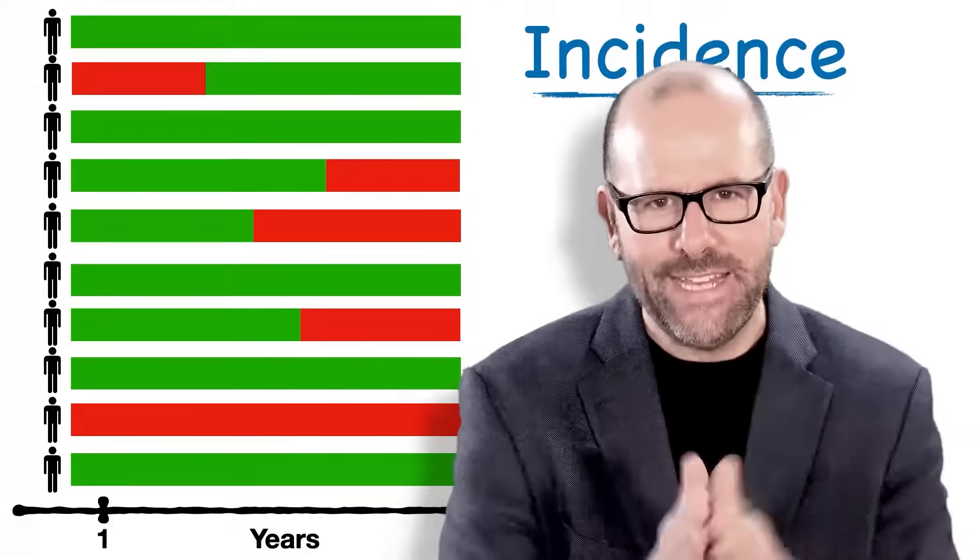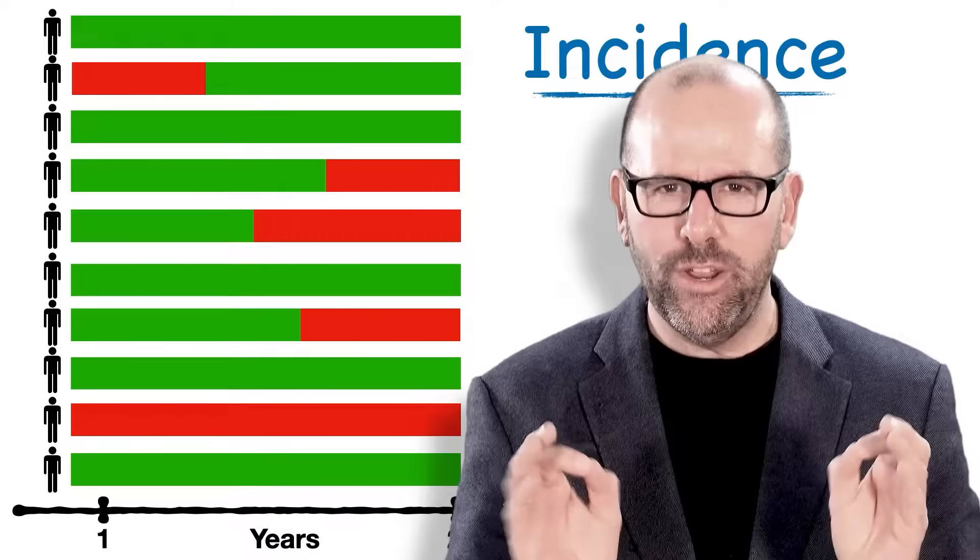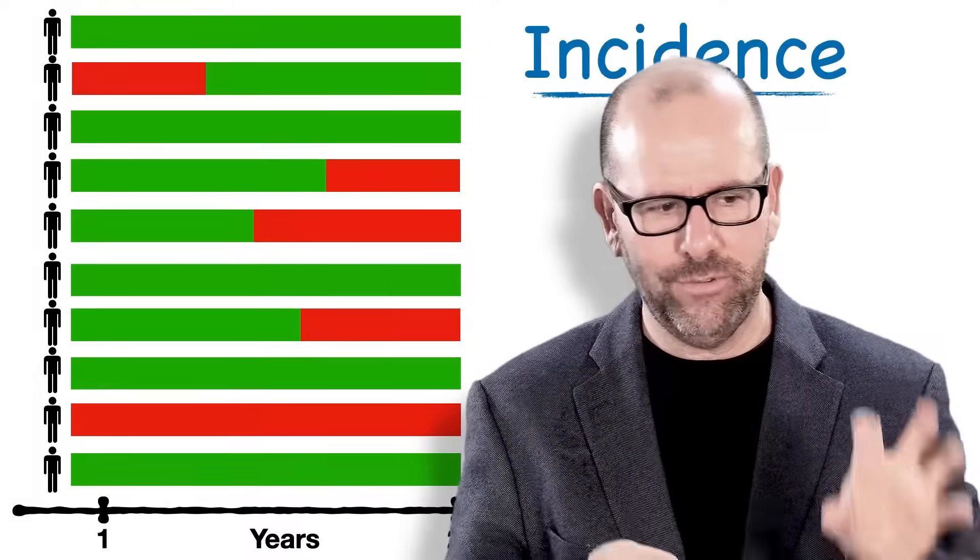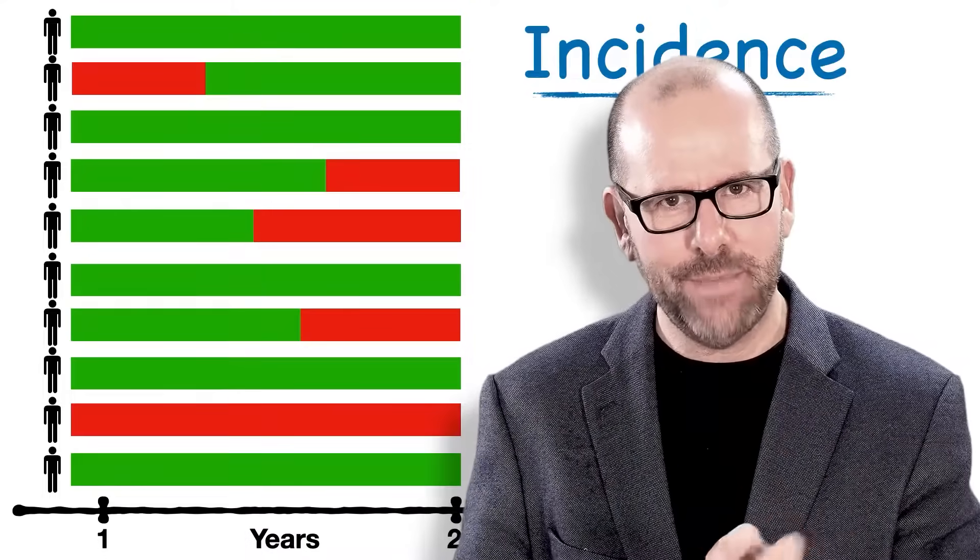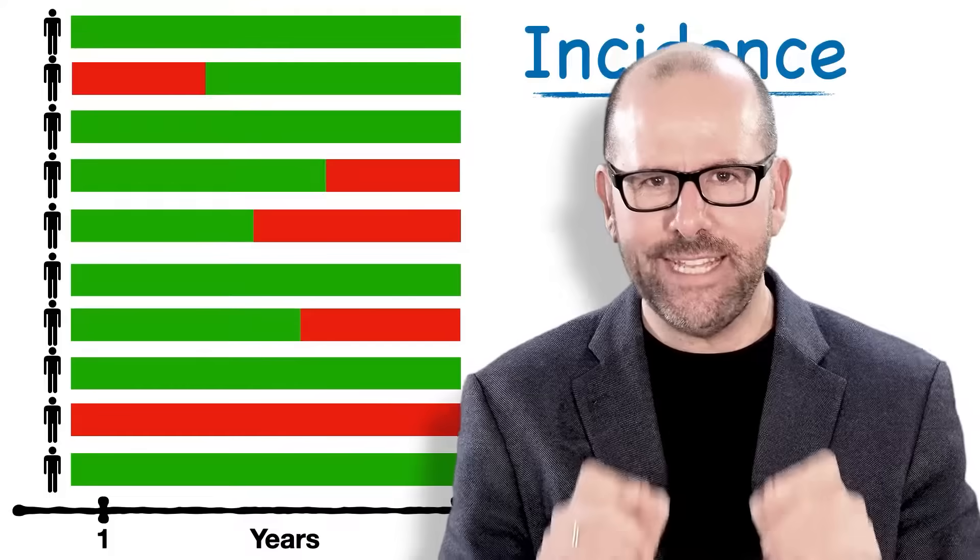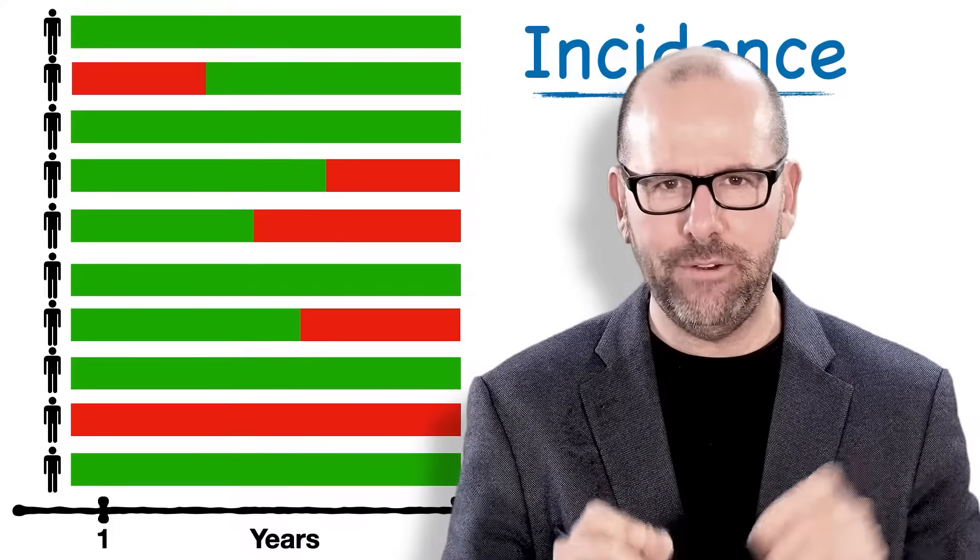So for example, if we had 10 people and we looked at them over a one-year period of time, we've got a defined population, we've got a defined period of time, and we're asking how many new cases of cancer emerged during that period of time.